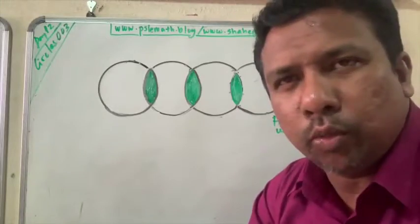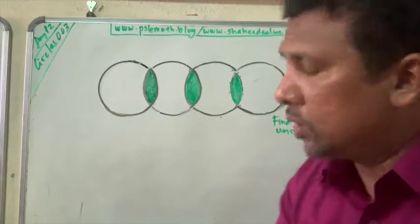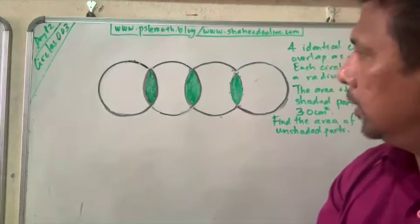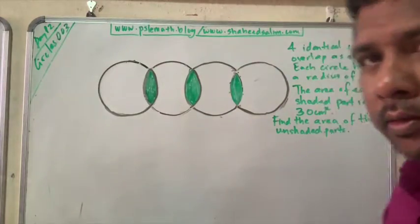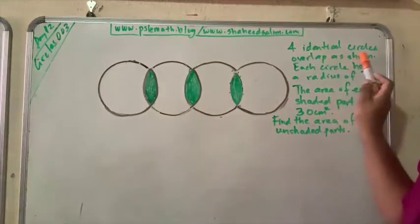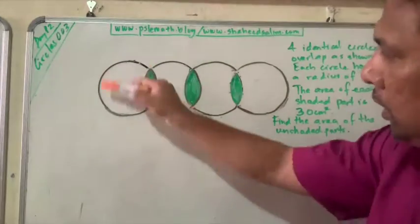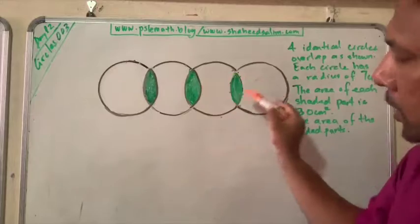We come to the final question of D12, question 3 on circles. You can see 4 circles here. Well let's read the question. 4 identical circles overlap as shown. Can you see the overlap? The green part is the overlap part.